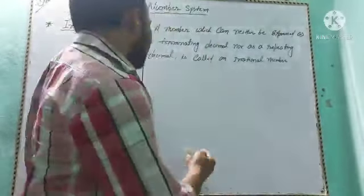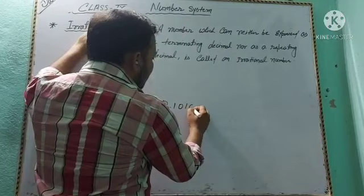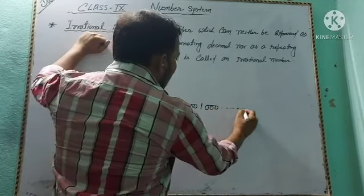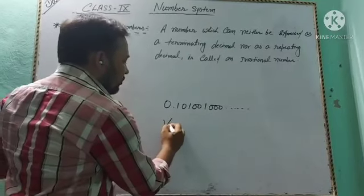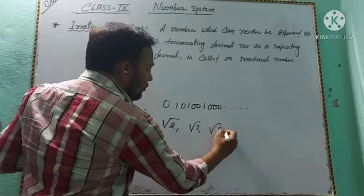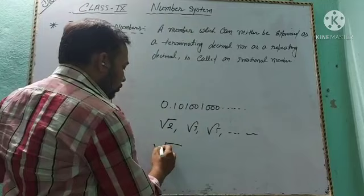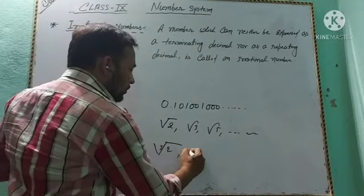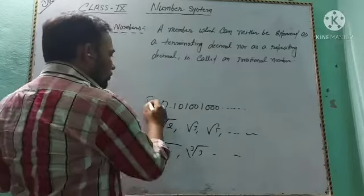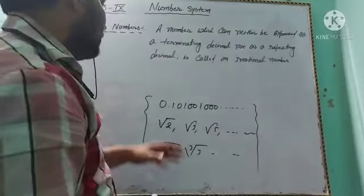For example, suppose 0.10100100... and so on. Such as √2, √3, √5, etc. These are examples of irrational numbers.